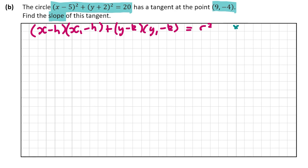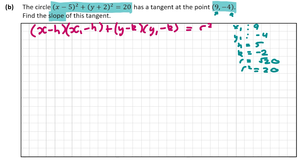So x1 is 9 and y1 is minus 4 — that's our point on the tangent. H is plus 5 because the equation is in the form x minus h, and k is minus 2 because it's in the form y minus k. R squared is 20 since that's the value after the equal sign in the circle equation.